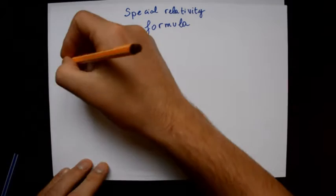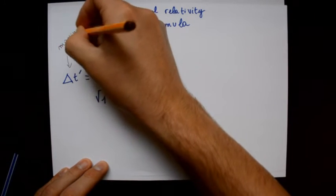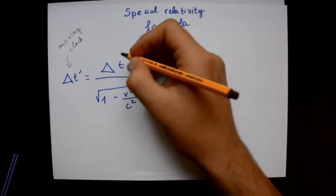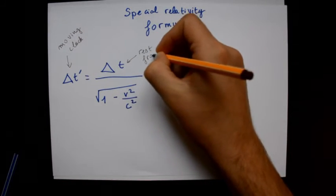We can also see V, which is the speed of the object compared to us, and C, which is the speed of light.